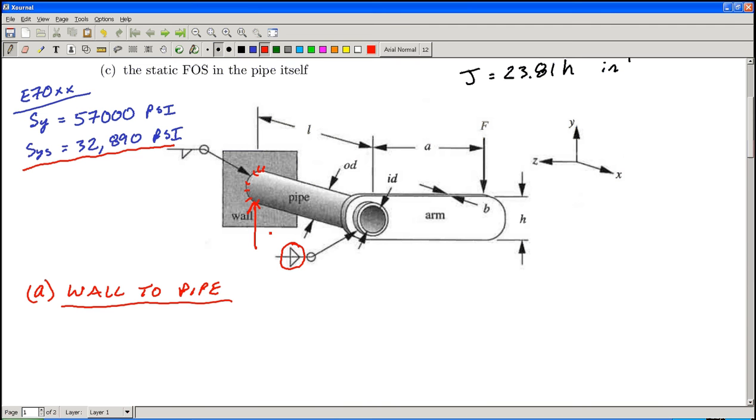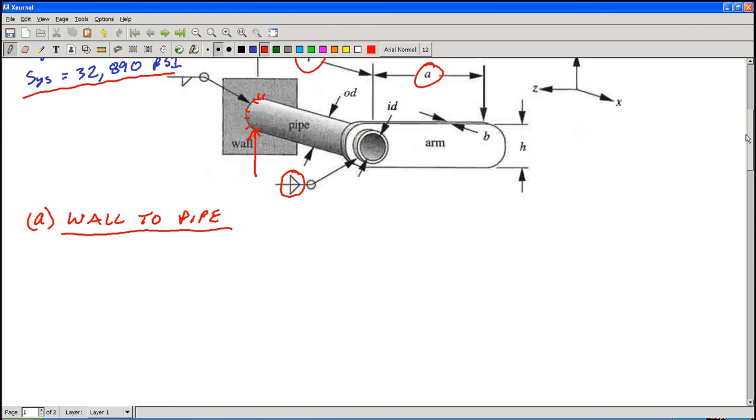That force is offset by distance A, which creates a torque, so I'm going to have a shear due to torsion. That force F is also offset by distance L, so that produces a bending moment at the wall. I'll have a shear due to that bending force. So we've got all three possible stresses in play here.